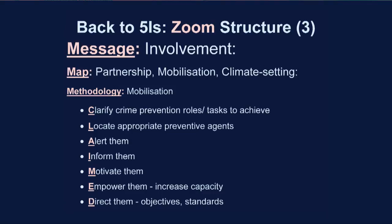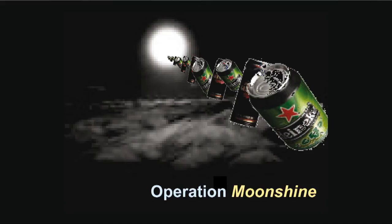Back to the five Is: involvement can be broken down into partnership, mobilisation of people, and climate setting. Mobilisation can be broken down further into a claimed framework — essentially a procedure to help get people to carry out crime prevention tasks and roles.